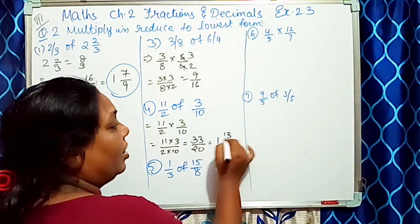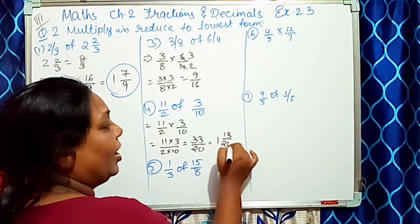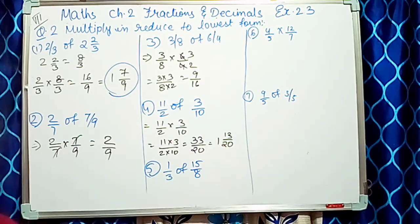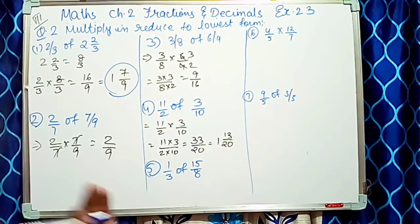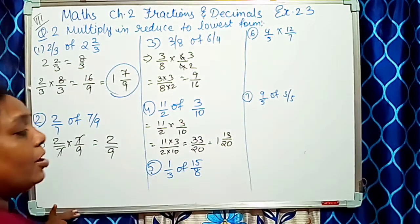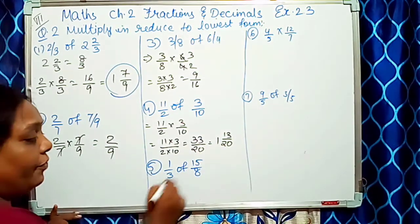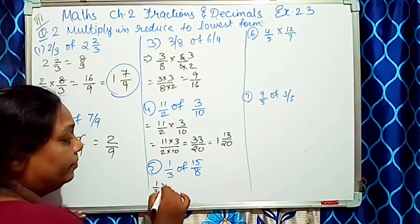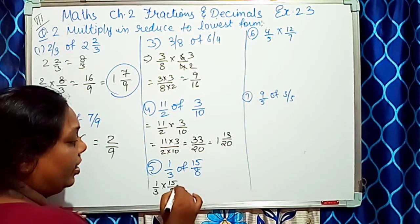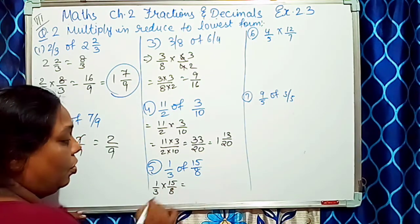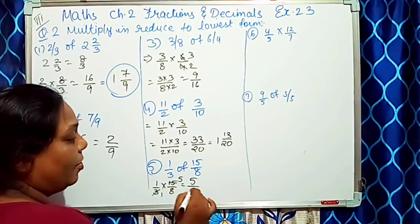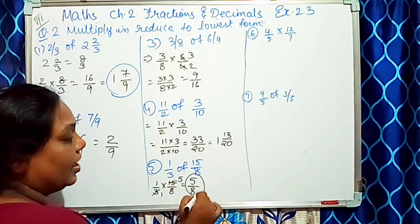Yahan answer aata hai 13/20 — 20 mein: 20+13=33... ek aur sum: 1/3 into 15/8. 3 aur 15 mein: 15÷3=5, toh 1×5=5, 1×8=8 — answer hai 5/8.